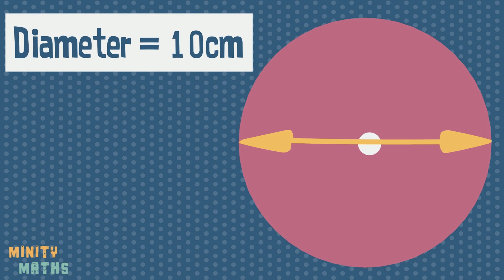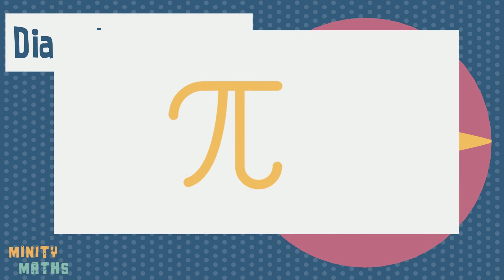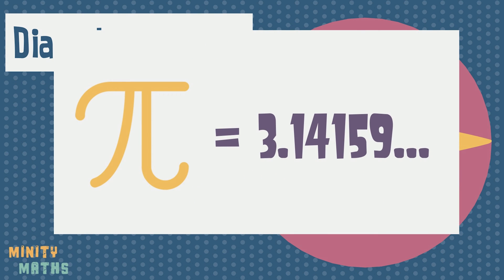To do this we also need to use the special irrational number Pi, which is represented by this symbol. Pi is a very important number, especially when it comes to circles.